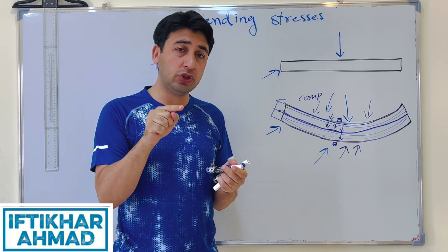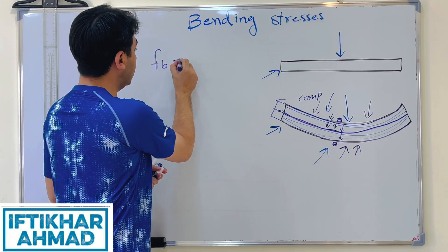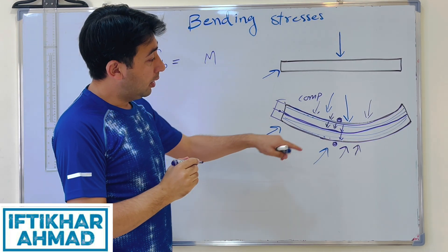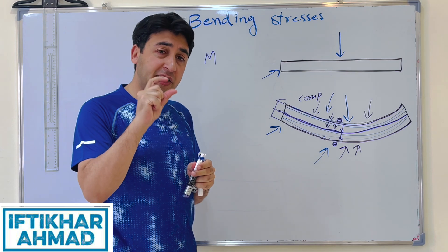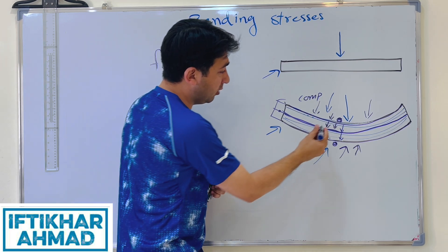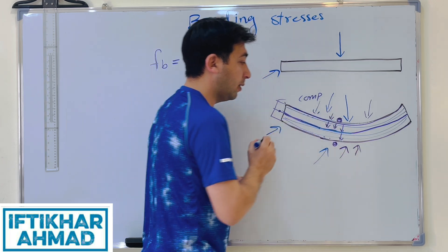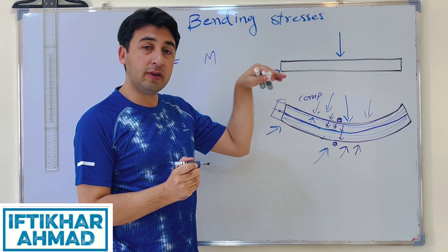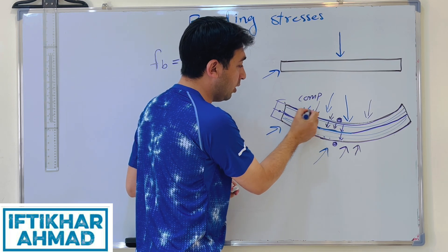Bending stresses fb are directly proportional to the bending moment — if the moment is more, there will be more bending stresses. They are also directly proportional to the distance from the neutral axis. Moving away from the neutral axis toward the top, compression increases progressively, reaching maximum compression at the extreme top fiber.